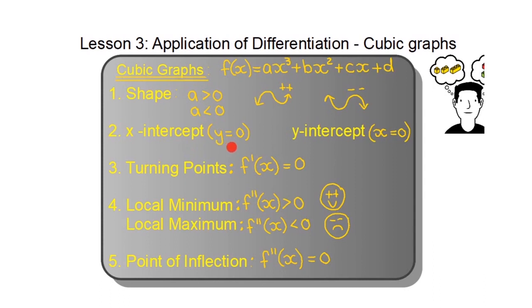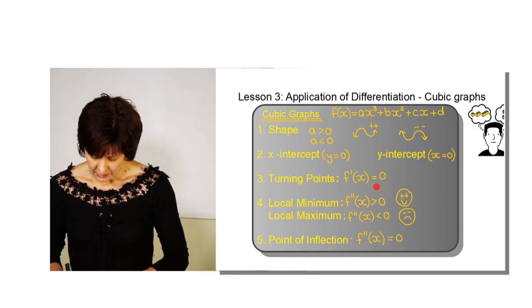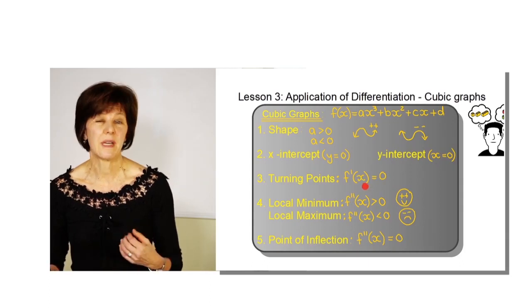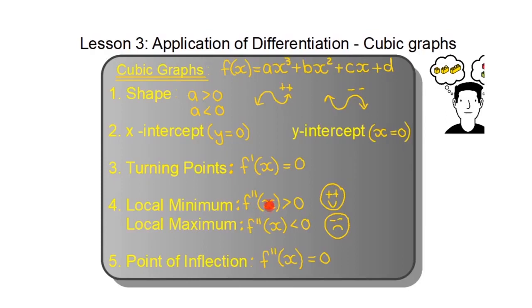For the x-intercept, y equals zero — that's true for all graphs. For the y-intercept, replace x with zero. At the turning points, the gradient is exactly zero, so the derivative equals zero. To determine whether a turning point is a local maximum or minimum, use second derivatives: if the second derivative is positive it's a local minimum; if negative it's a local maximum. The point of inflection is where the second derivative equals zero.